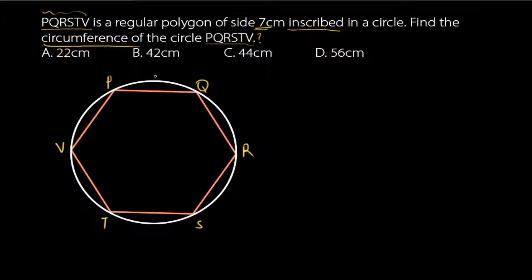So from P to Q is 7, from Q to R is 7, from R to S is 7, from T to S is 7, from V to T is 7, and from P to V is 7.